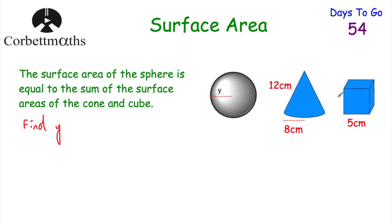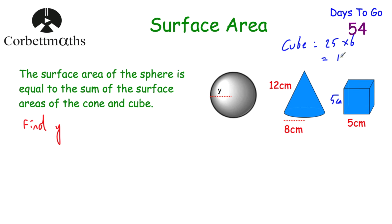Let's start with the cube — it's the easiest. Each side has a length of 5 centimetres, so the area of each face is 5 times 5 equals 25 centimetres squared. A cube has six faces, so we multiply 25 by 6, giving us 150 centimetres squared as the surface area of the cube.